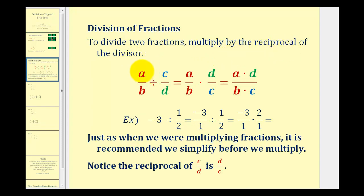So if we have a over b divided by c over d, we can change the division to multiplication as long as we multiply by the reciprocal of our divisor, which is c over d. Notice here we're dividing by c over d, and then we're going to multiply by d over c.